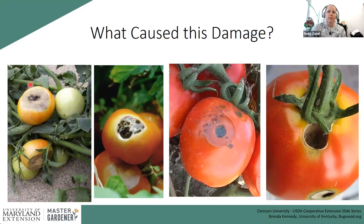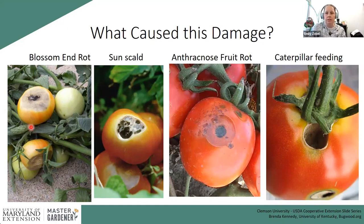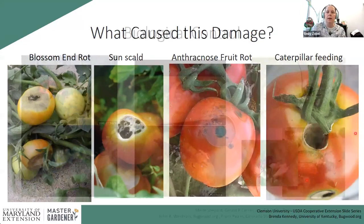On the first tomato, there's damage at the base — soft and smudgy. The second has a similar marking but on the side. The third shows sunken, wet-looking black ring formations. The fourth has a large dark discoloration. Through deduction: the first is blossom end rot, a nutrient deficiency or water imbalance; the second is sunscald — too much intense sun giving the tomato a sunburn; the third is a fungal disease; and the fourth is insect damage.